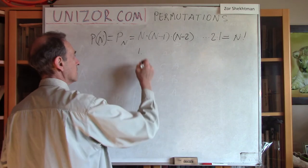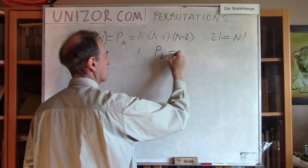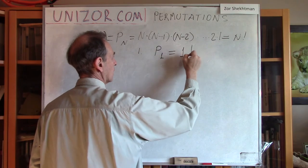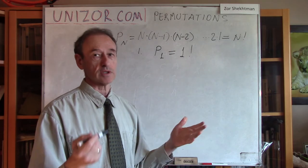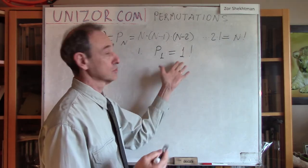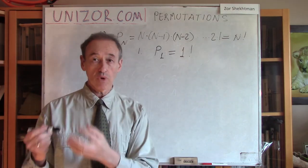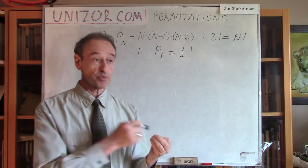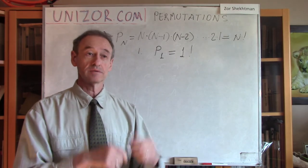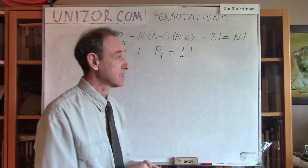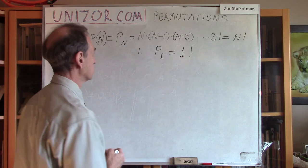Step number one is to check that the permutation of one element is exactly one factorial. One factorial is one, a product of all numbers from one to one, which is one. And permutation of one element, how many times, if I have only one element, how many times I can put it in order? There is no other element, so there is only one way. This is element number one, and the last, the first and the last element. This formula actually is correct for N is equal to one.